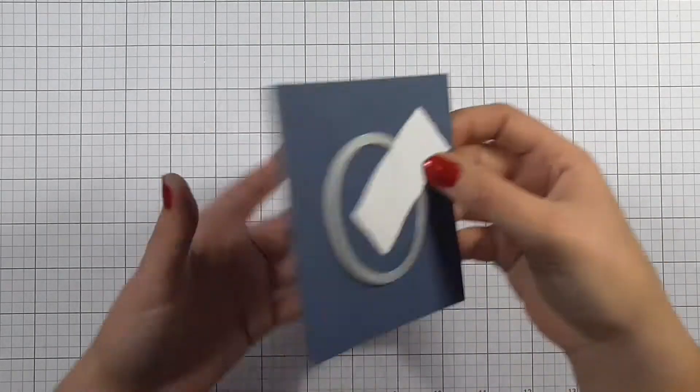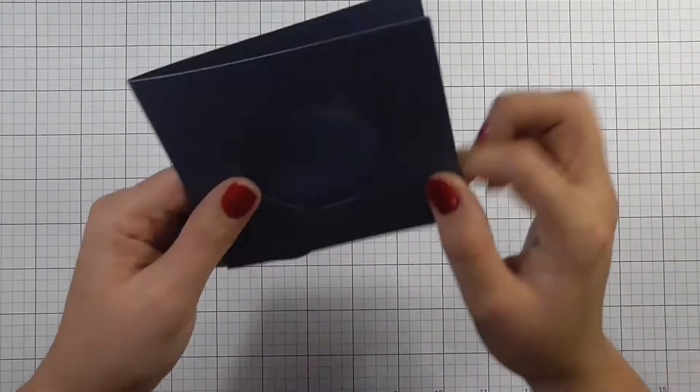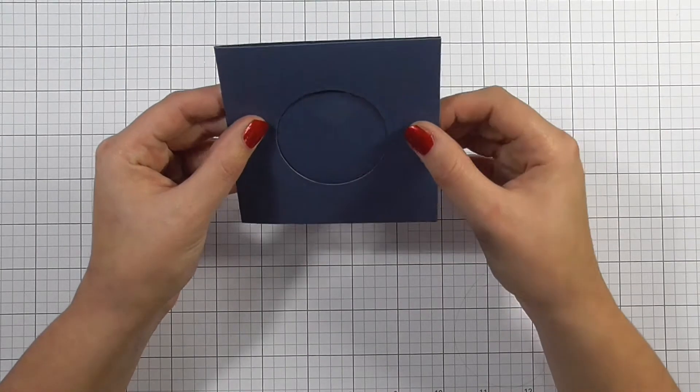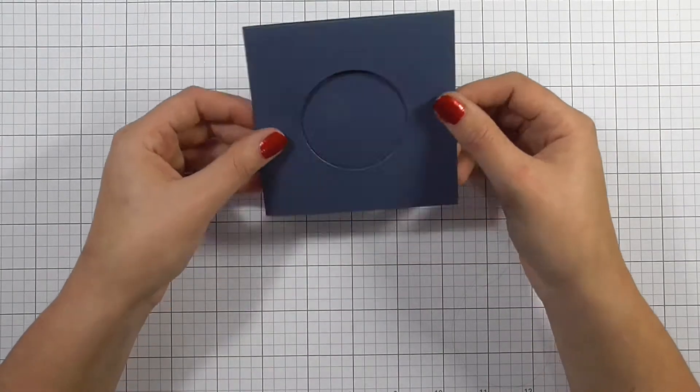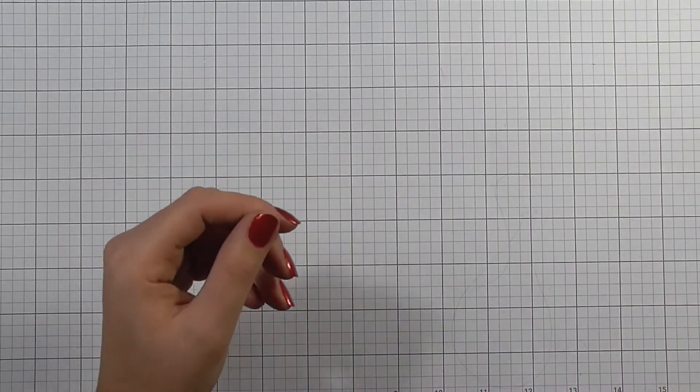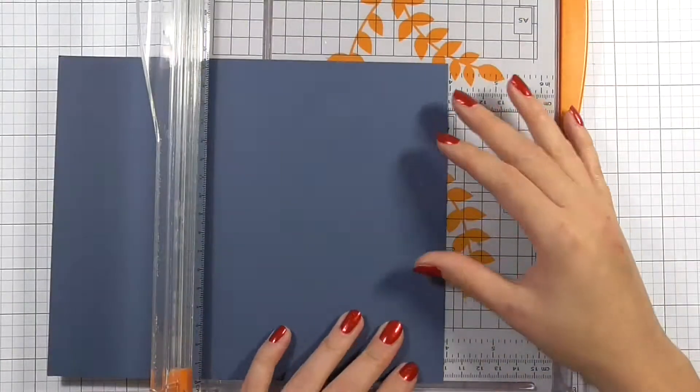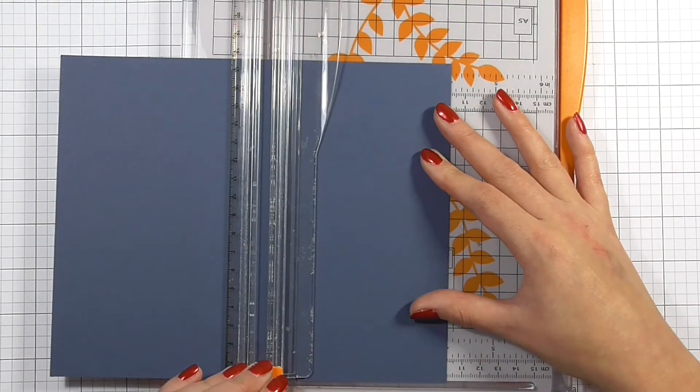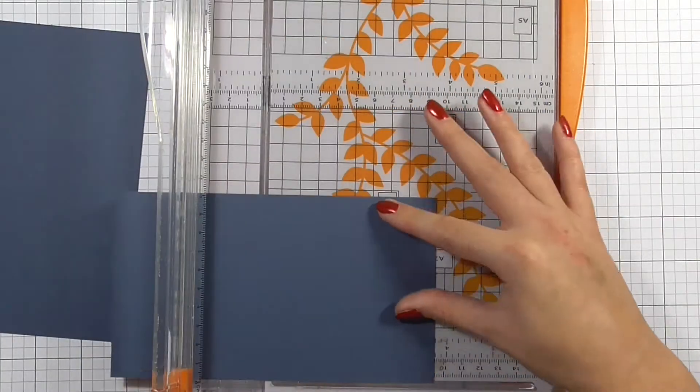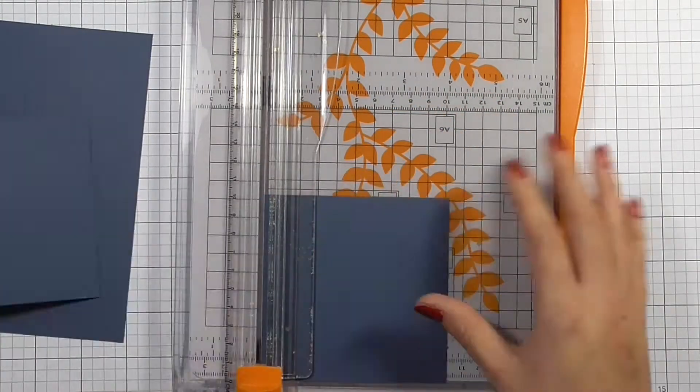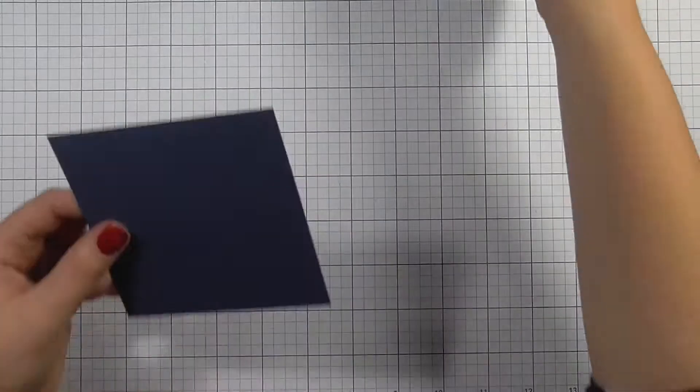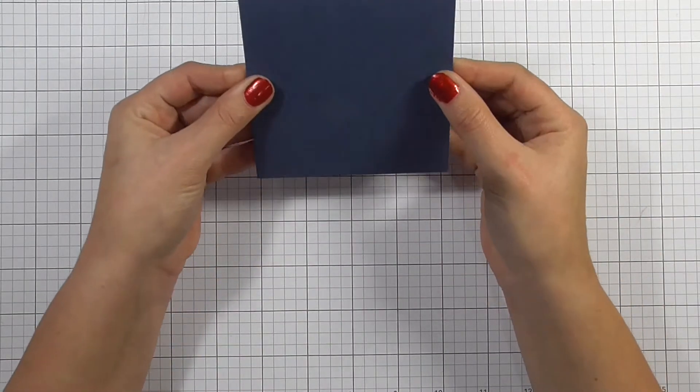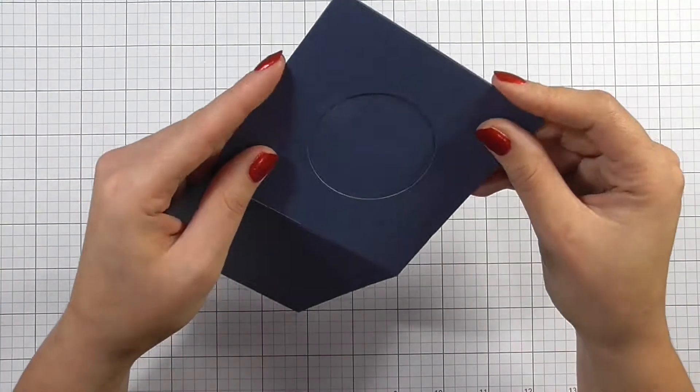So I've just took a circle die and taped that in place. I decided to use one that would fit perfectly around the Merry and Bright sentiment. So I'm going to go ahead and cut another piece of cardstock down to four inches by four inches and this will essentially be the front panel of the card, and I'll then put all of the shaker material in between the front panel and the card front.